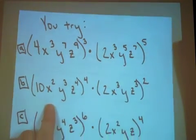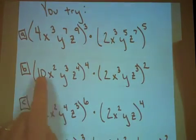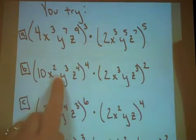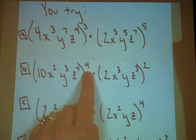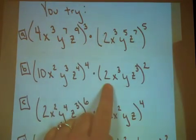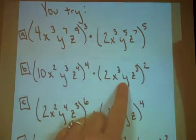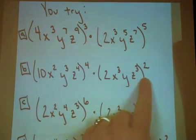Problem B. 10 x squared, y to the 3rd, z to the 4th, all of that to the 4th power, times 2 x to the 3rd, y, z to the 3rd, all of that squared.